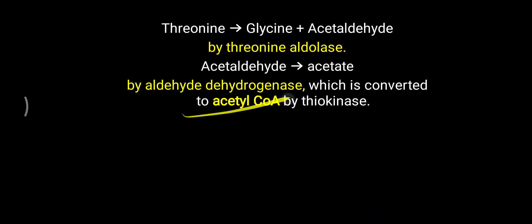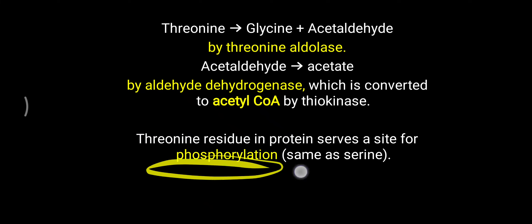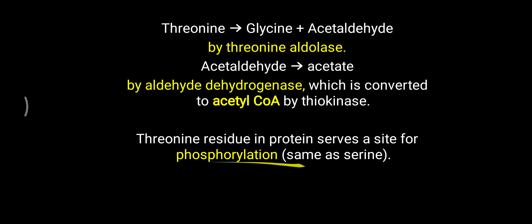So mostly remember that threonine is glucogenic, but via threonine aldolase it can produce acetyl-CoA and thus make ketone bodies. Further, threonine residues in proteins serve as a site for phosphorylation. Threonine has a hydroxyl group, and this hydroxyl group provides the site for phosphate attachment, making phosphorylation possible — quite similar to serine. This phosphorylation is very helpful for covalent modification of enzymes, leading to either activation or deactivation.